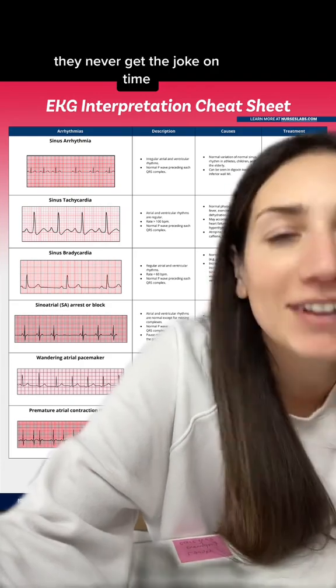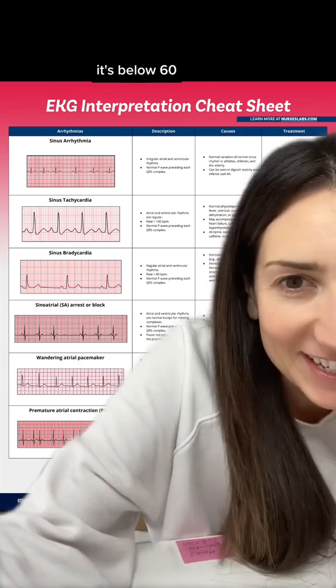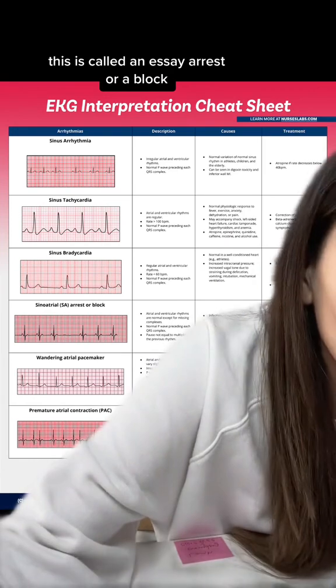Sinus bradycardia — it's the same, normal but really slow. They're always late to the party. The rate is below 60.